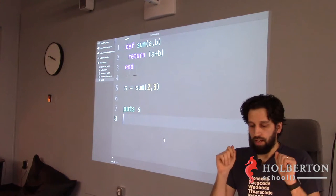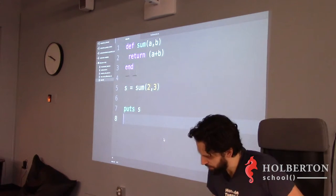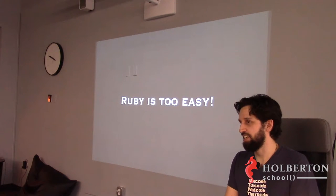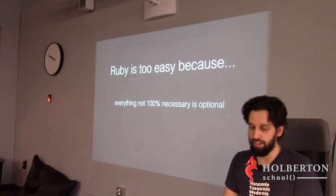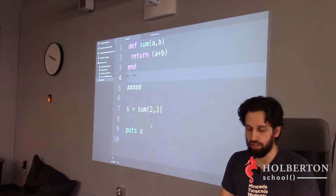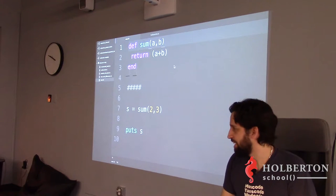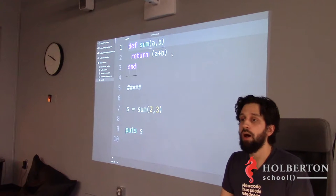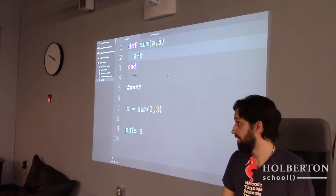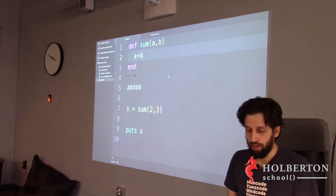But because Ruby is too easy — it's really trying to make things so easy — let's look at this function again and consider what I can remove. The `return` keyword is not needed: Ruby automatically returns the last evaluated expression. Everything returns something in Ruby, so the last line of your function is the return value.